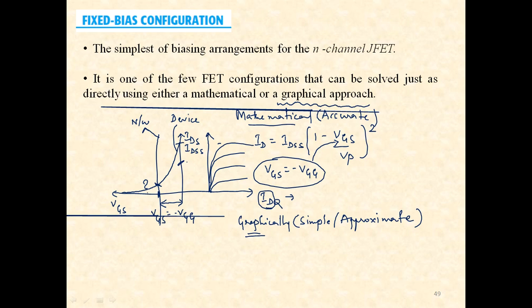Even if you take some other value of IDS, the line will be the same because VGS is independent of ID for the case of fixed bias. Due to that, the bias is fixed to a particular VGG value — hence the term fixed bias configuration.